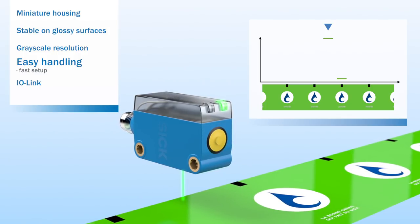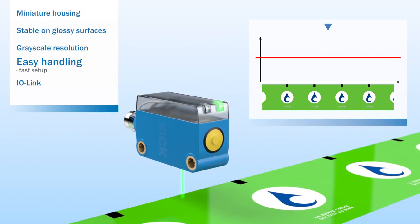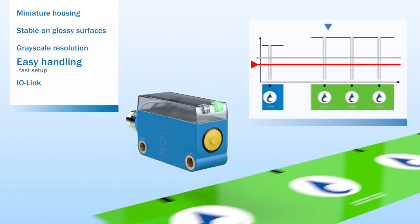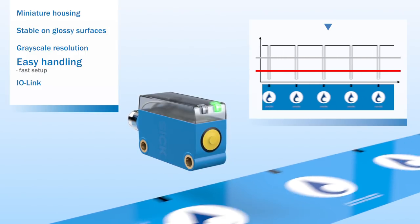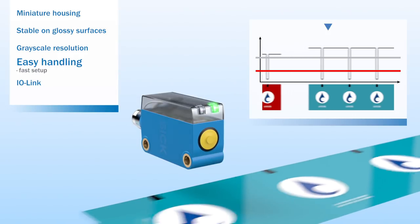The optimum switching threshold is determined so work can continue. For special applications, a close-to-mark teach-in method can be used for optimum handling where backgrounds change but the mark remains consistent.